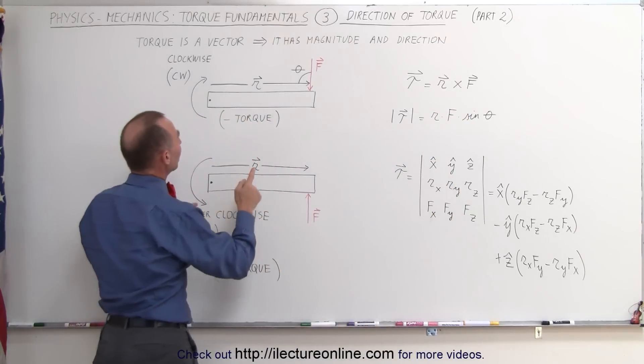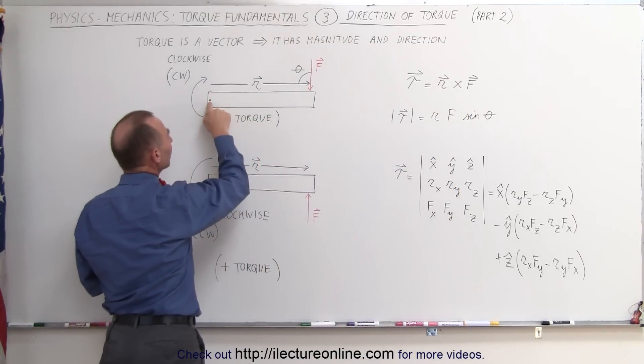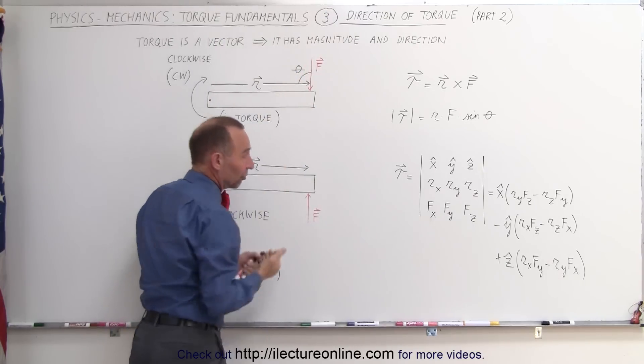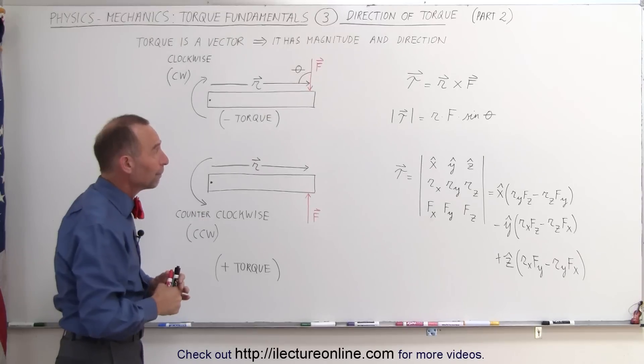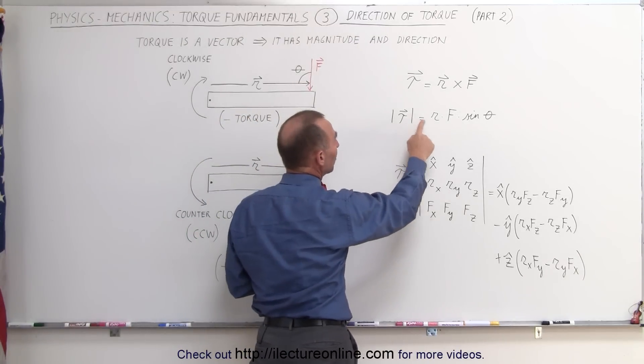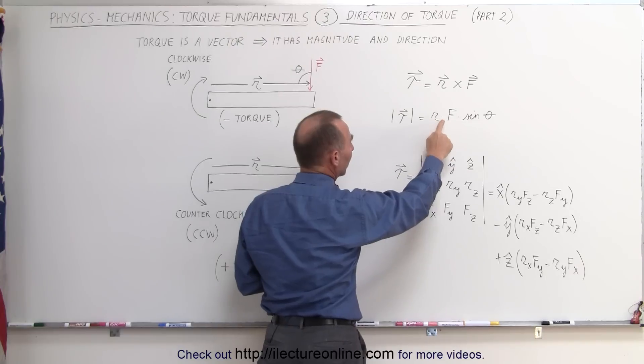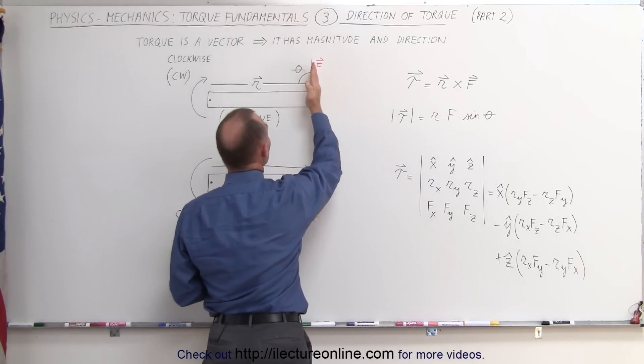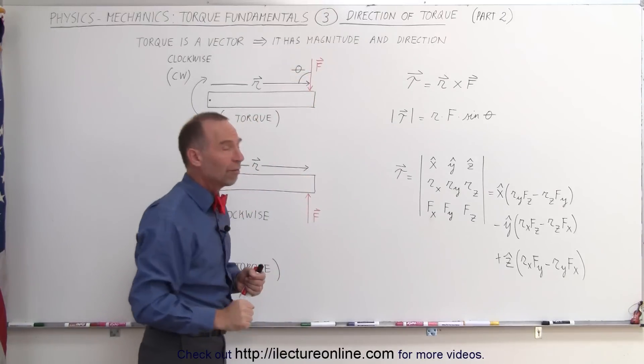The position vector is the vector from the pivot point, from the point of rotation, to where the force is acting. And then the direction of the force, of course, is the direction in which the force is pointing. If you want to find the magnitude of the torque in this case, we simply multiply the magnitude of the position vector times the magnitude of the force times the sine of the angle between the direction of the force and the direction of the position vector.